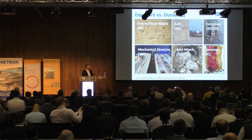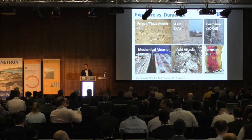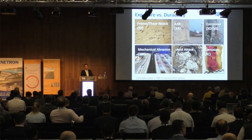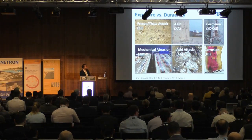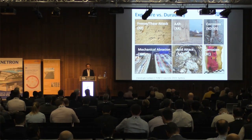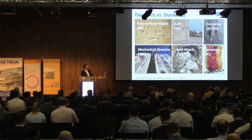These direct deterioration mechanisms are often combined with indirect deterioration mechanisms caused by depassivating agents — chlorides or carbonation — which cause corrosion. The embedded steel can corrode, and for that reason you can also observe cracking and spalling due to this indirect attack via reinforcement corrosion.